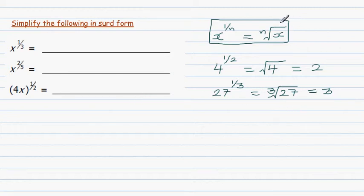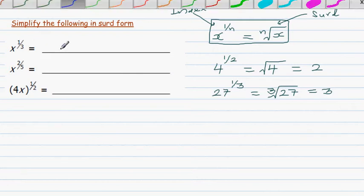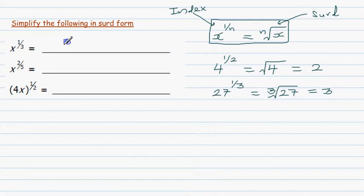So this is the surd form, and this is called the index form. From the index form you want to change it into the surd form. So here, x to the power 1 over 3 — using the rule — is the cube root of x. That's the surd form.